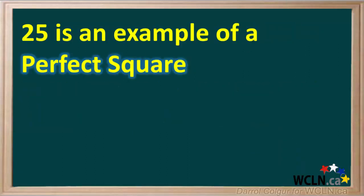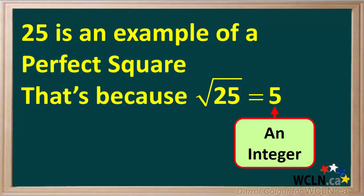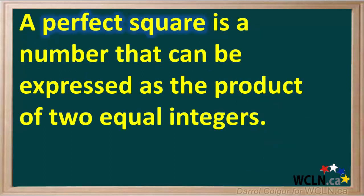25 is an example of a perfect square. That's because the square root of 25 is exactly equal to 5, which is an integer. A perfect square is a number that can be expressed as the product of two equal integers.